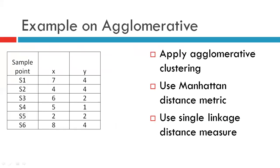Let us take the example we have created. We have six different sample points that are to be clustered. We will be using the Manhattan distance matrix for this example and we will be using the single linkage distance measure. Let us have a quick review of how to obtain Manhattan distance.